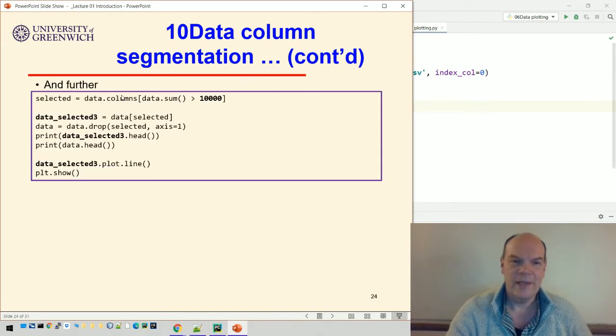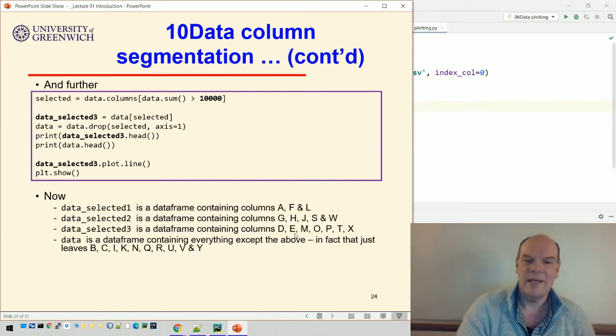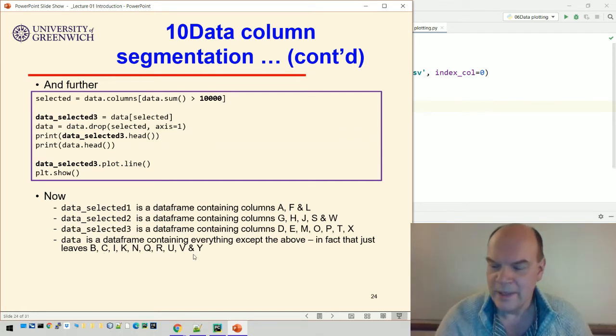And you can repeat that. So this is now everything between 10,000 and 40,000 is put into data_selected_3. And that gives you these columns. And then the last, the remaining data is these columns. And then we can visualize each of those segments separately.